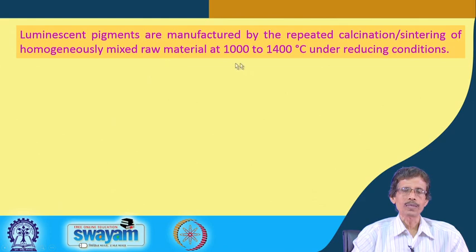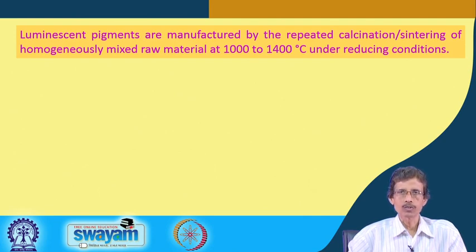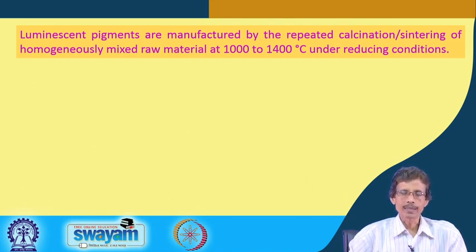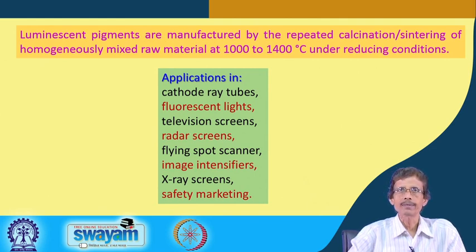Luminescent pigments are manufactured by repeated calcination and sintering of homogeneously mixed raw materials. The components are first homogeneously mixed using a solid-state homogenizer to achieve uniform composition, which can be analyzed for homogeneity. The process is carried out at temperatures of 1000 to 1400 degrees centigrade under reducing conditions.